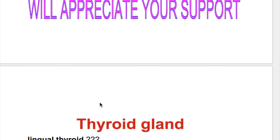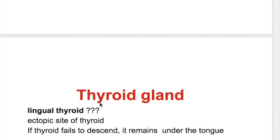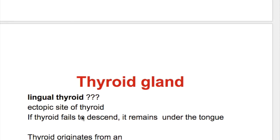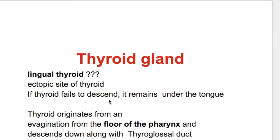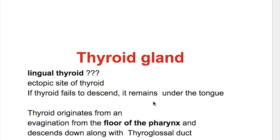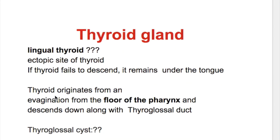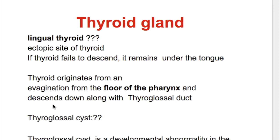What's a lingual thyroid? Lingual thyroid is an ectopic site of thyroid gland. If the thyroid fails to descend, it remains under the tongue. The thyroid gland originates from evagination from the floor of the pharynx and descends down along the thyroglossal tract, from under the foramen cecum of the tongue to its position in the neck.